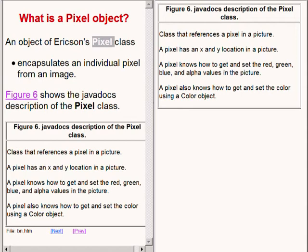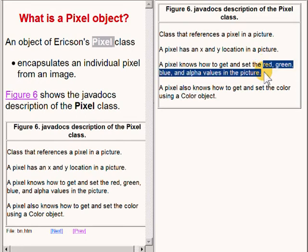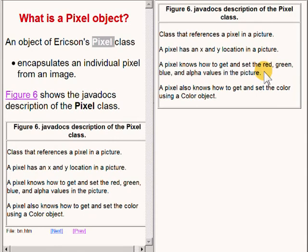Color with an uppercase C is the name of a class in the standard sun java library. Ericsson is telling us here that an object of the pixel class can manage the color of a pixel either in terms of its red green blue and alpha values or in terms of its overall color which is described using an object of the color class.